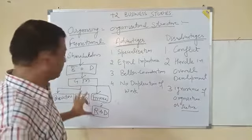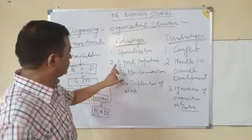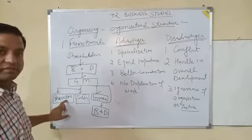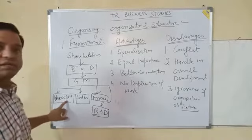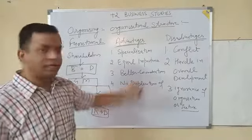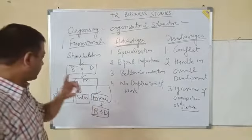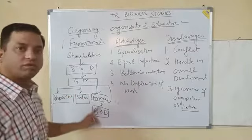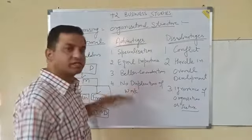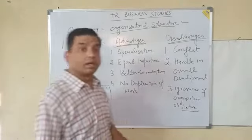Next, equal importance — the company gives equal importance to all departments. No doubt production is one of the most important departments, but it doesn't mean all focus will be on it; equal importance will be given to all. Then, no duplication of work — the work of the finance department will be performed by the finance department only, not by sales or production. That's why there will be no duplication of work.